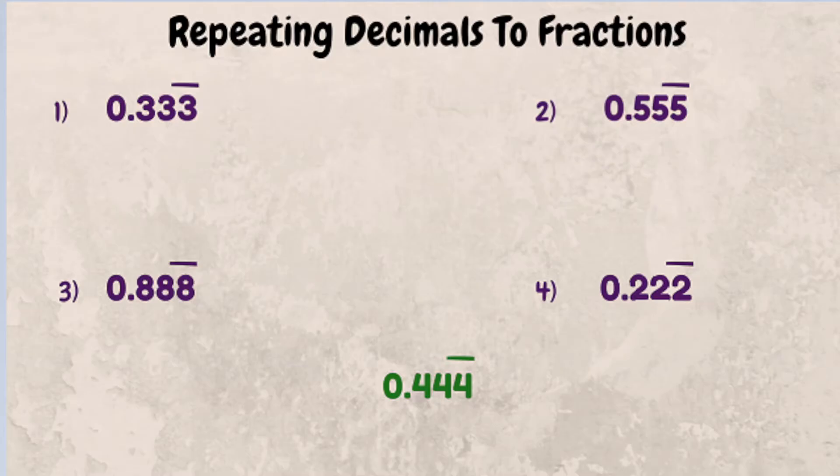In this video, we're going to focus on repeating decimals that have one digit that repeats. So you can look at example one, 0.333, and this line right here is a vinculum, which you could put over top of here and get rid of the rest of them if you wanted to.